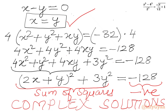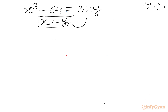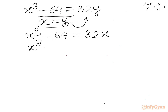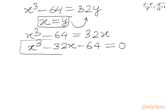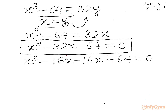Let us consider x equal to y in equation number 1. So I will write x cubed minus 64 equal to 32 times y. Applying x equal to y: x cubed minus 64 equal to 32x. Now I can write x cubed minus 32x minus 64 equal to 0. This is a cubic equation. We can use the method of factorization. I can split minus 32x as minus 16x minus 16x, giving us x cubed minus 16x minus 16x minus 64 equal to 0.